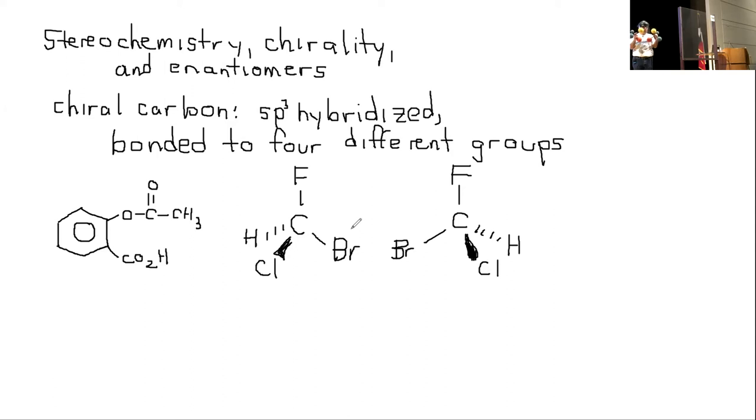No matter what you do, and I would suggest you get with some models and play around with them, no matter what you do, you're not going to be able to get them to superimpose. They are permanently distinct from one another. Really, this is a type of stereoisomerism, similar to what we saw in cycloalkanes with cis and trans, and also in alkenes with cis, trans, and E-Z. So this also is a type of stereoisomerism.